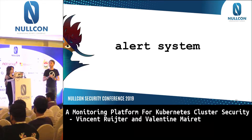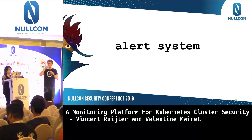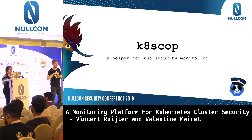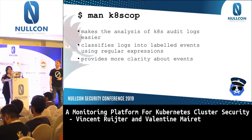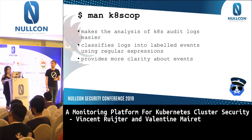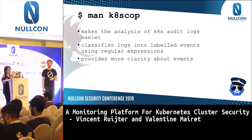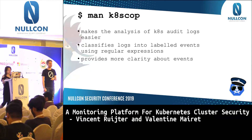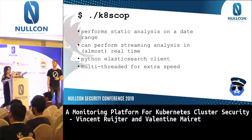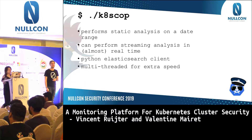Moving on to the alert system: because we were able to see this information in the logs, it gave us the idea to parse these logs and perform regex matching to detect specific attacks. We called it KScope — it's basically a helper for Kubernetes security monitoring. It makes the analysis of Kubernetes audit logs easier and classifies these logs as labeled events. For example, getting secrets or creating a pod will be labeled, so you don't have to look at the raw request yourself. KScope can perform static analysis on a given date range and also streaming analysis in near real time.